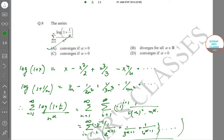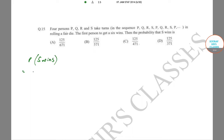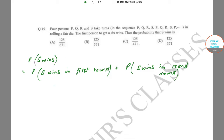Next problem: four persons P, Q, R, and S take turns in sequence P, Q, R, S, P, Q, R, S rolling a fair die. The first person to get a 6 wins. The probability that S wins equals the sum over all rounds: P(S wins in round 1) + P(S wins in round 2) + P(S wins in round 3) + …